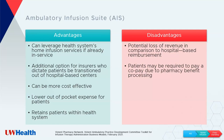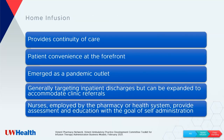Advantages of the ambulatory infusion suite: it leverages existing home infusion services, retains patients within the health system, offers lower out-of-pocket costs for patients, and is generally more cost-effective. A key disadvantage is the potential loss of revenue compared to hospital-based reimbursement — payers reimburse at higher rates in hospital outpatient departments. You have to weigh being reimbursed less against losing a patient to care elsewhere.